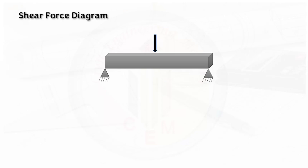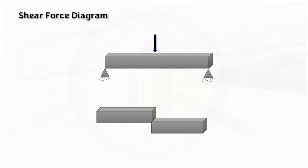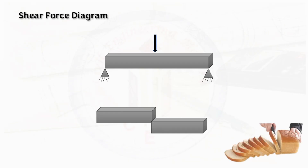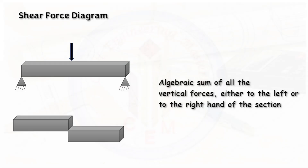Now let's look into the technical definitions. When a load is applied perpendicular to the length of the beam, it tends to shear the beam. To resist shear force, we provide shear reinforcement in the form of stirrups in beams. The best example for shear force is cutting a bread loaf into slices. Shear force is the algebraic sum of all the vertical forces either to the left or to the right of the section.